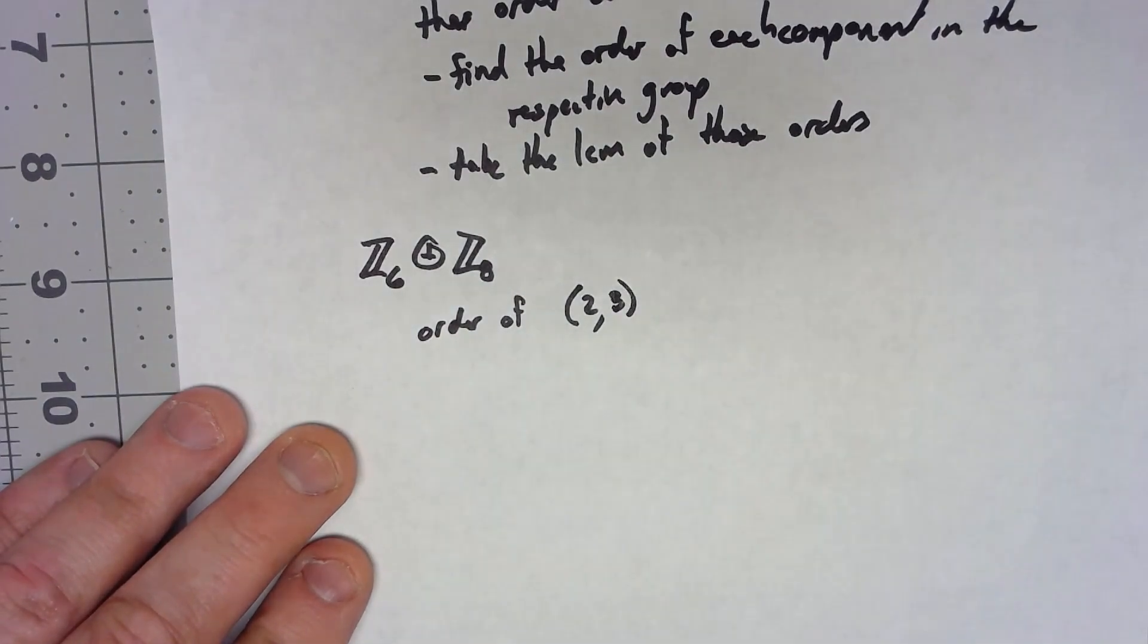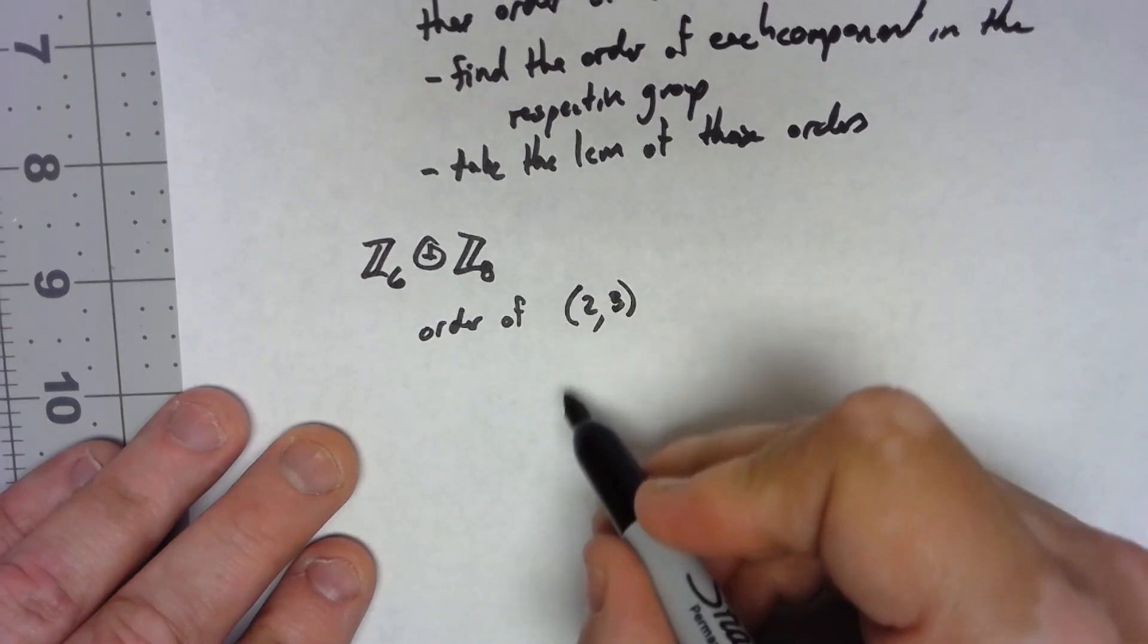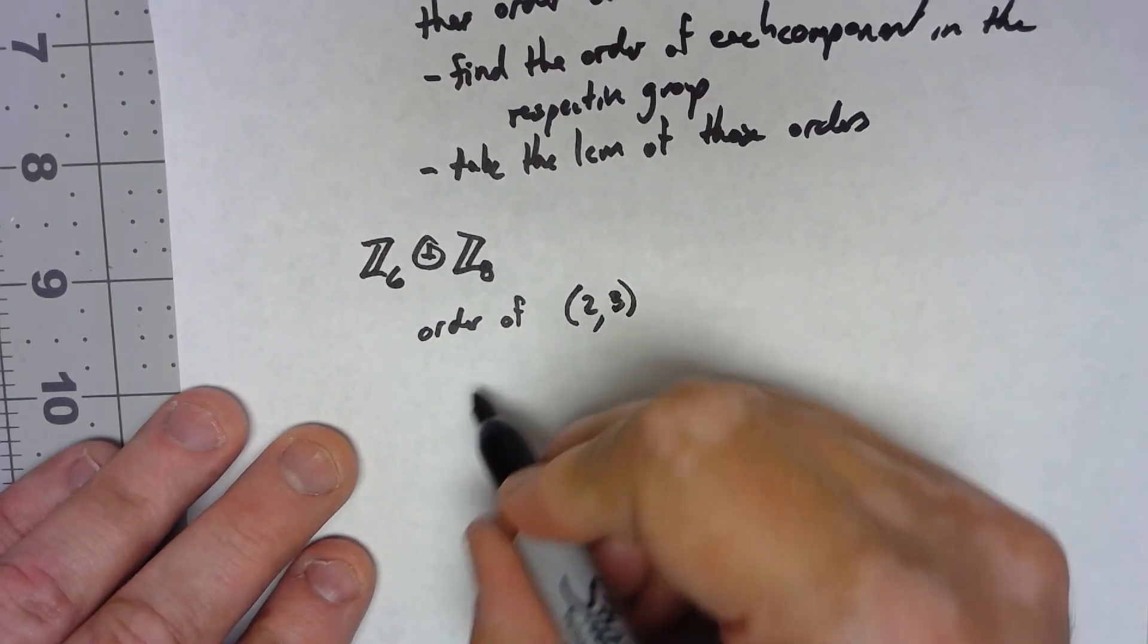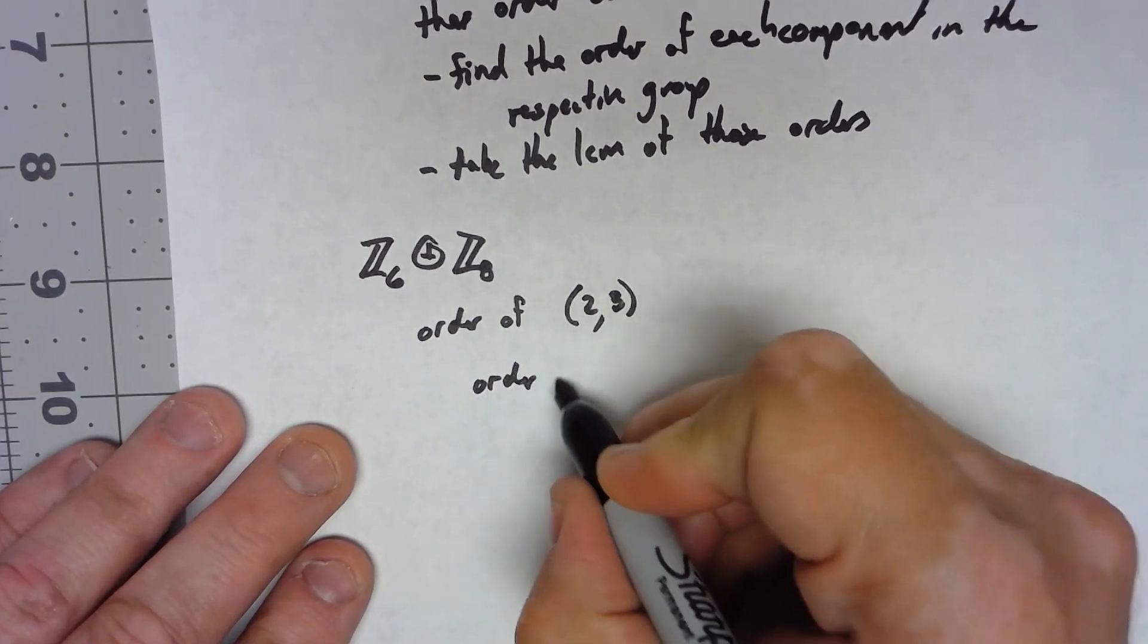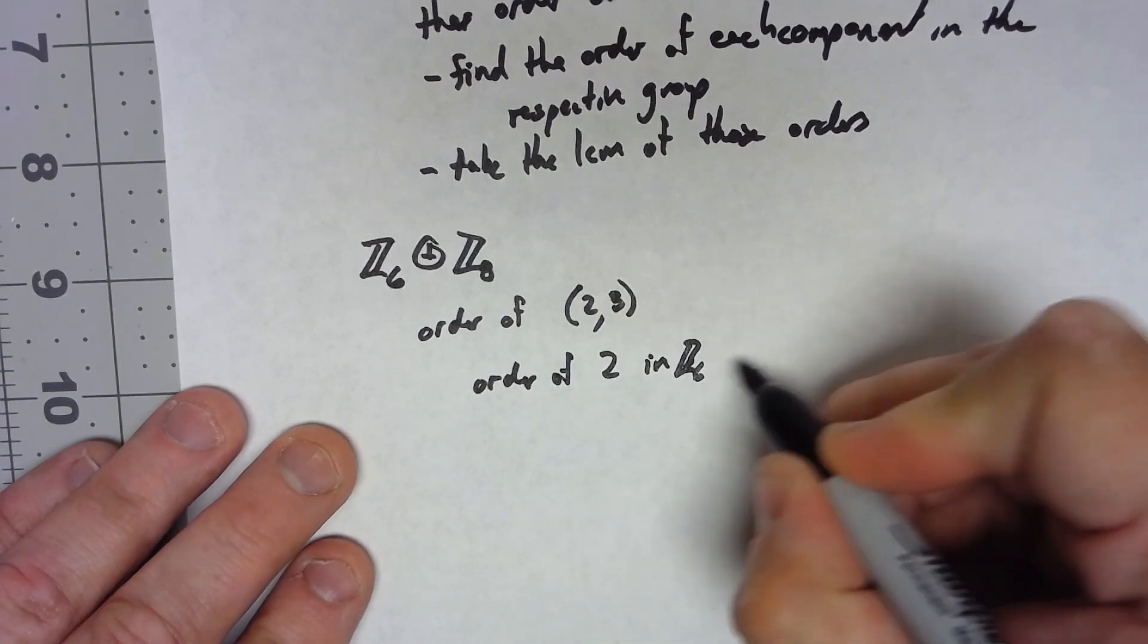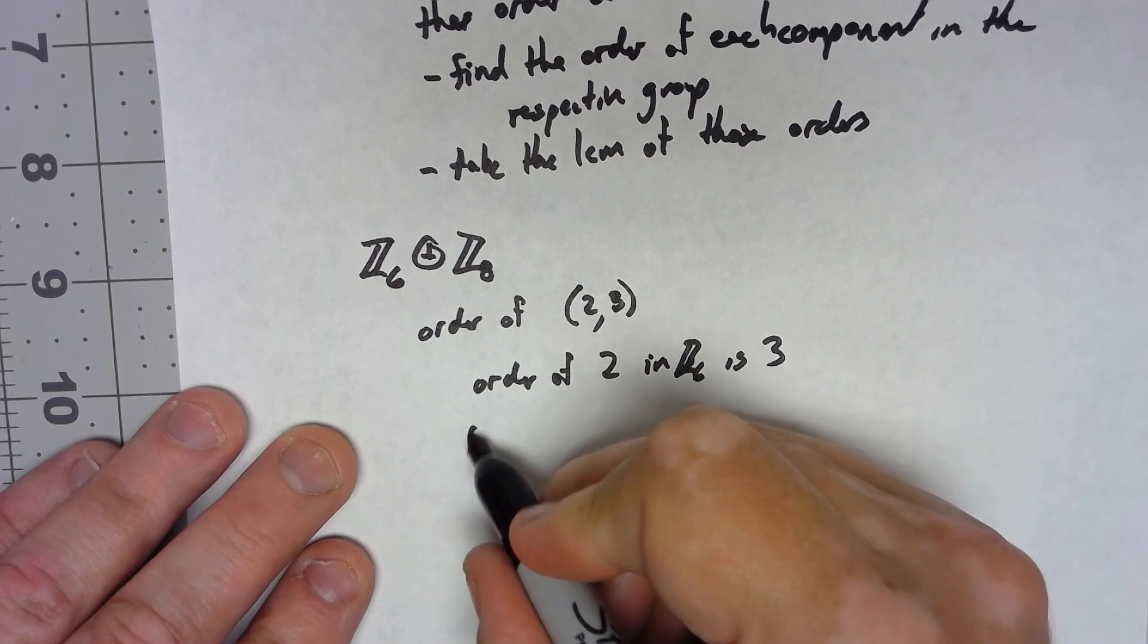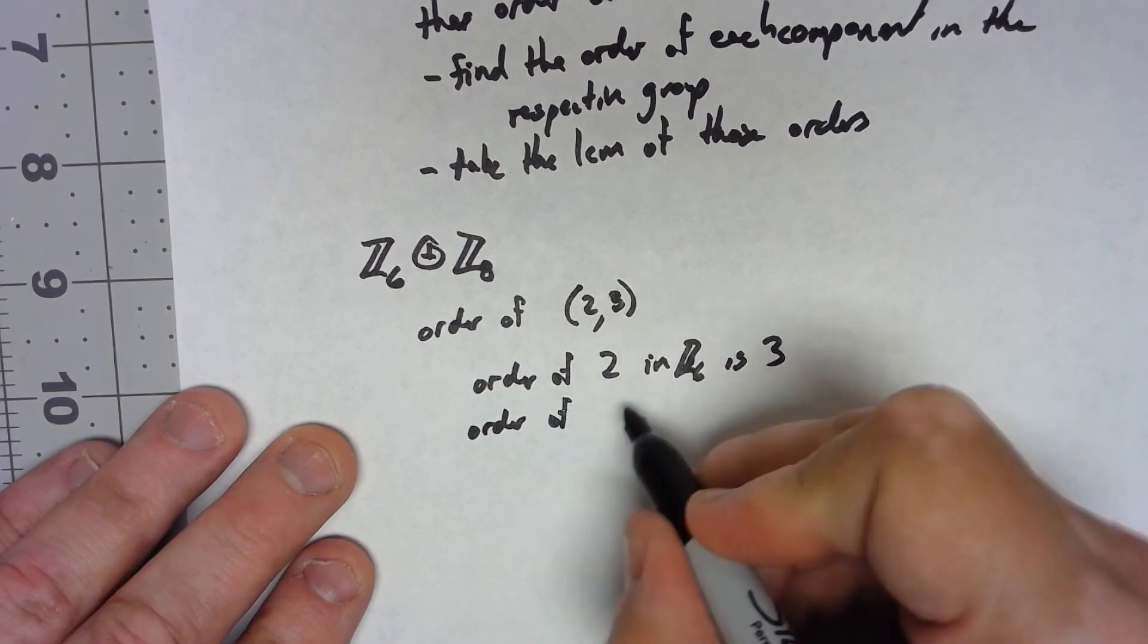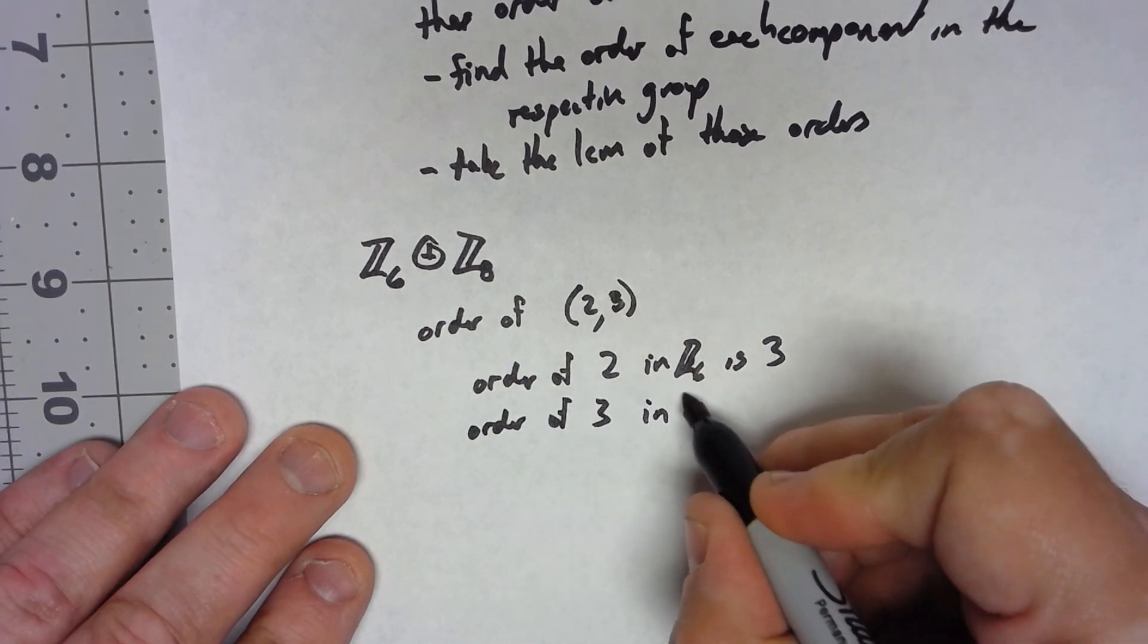Well, the order of 2 in Z6 is 3. The order of 3 in Z8 is 8.